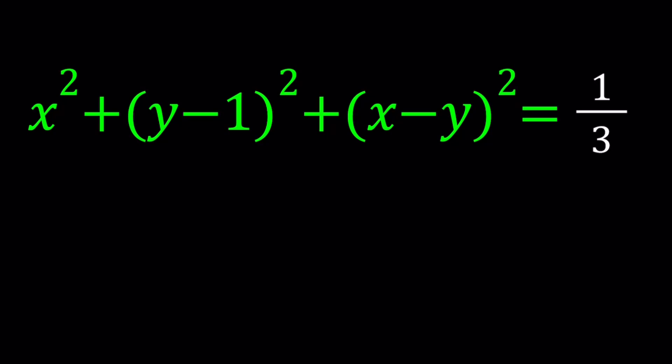So first of all, when you look at an expression like this, I have the sum of three squares being equal to one-third. What does this look like? This is kind of messy. If all of this, the sum was equal to zero, then it would be more meaningful, but being equal to one-third, and we're not looking for integer solutions, and obviously x, y cannot be integers, so it's kind of messy. Let's go ahead and expand everything. We're going to get x-squared plus y-squared minus 2y plus 1, and then x-squared minus 2xy plus y-squared equals one-third.